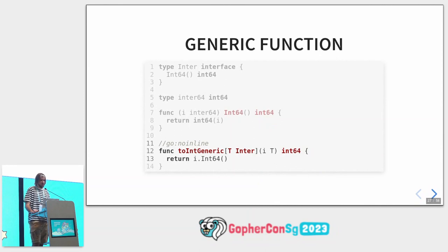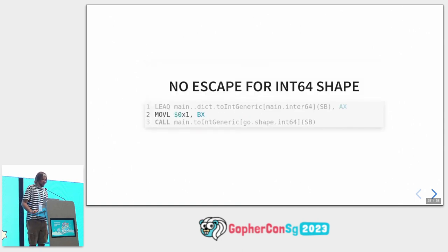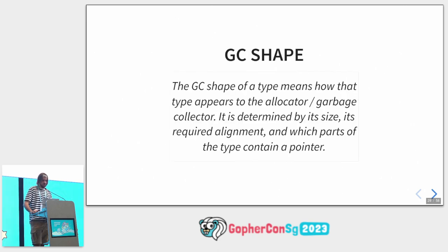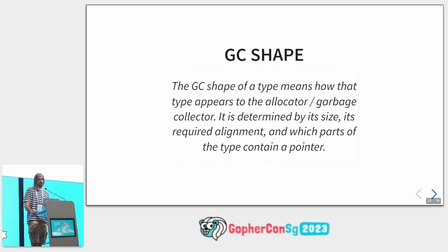We can also try using a generic function. It has the same implementation as the interface version — the only difference is the type: it's T instead of the interface type. In this case we don't have allocation for the generic. As you can see, the generic has the int64 shape. This shape is according to the latest approved proposal for generic GC shape — the shape of a type means how it appears to the allocator and garbage collector. In our case this value appears as a value type integer, so the compiler will not move it to heap. But for some other shapes the value could be moved to heap — for example for pointer types or structures with pointer fields.